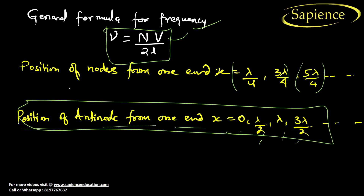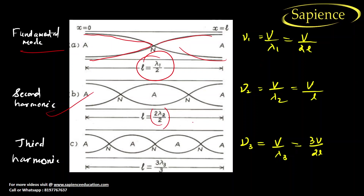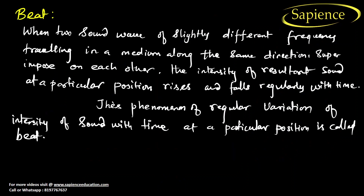For an open organ pipe, in the fundamental mode there is 1 node and 2 anti-nodes, and the length equals lambda/2. For the second harmonic, length = 2·(lambda₂/2) = lambda₂. For the third harmonic, length = 3lambda₃/2. The frequencies are: f₁ = v/(2L), f₂ = v/L, f₃ = 3v/(2L). You need to memorize these formulas to solve different types of problems.